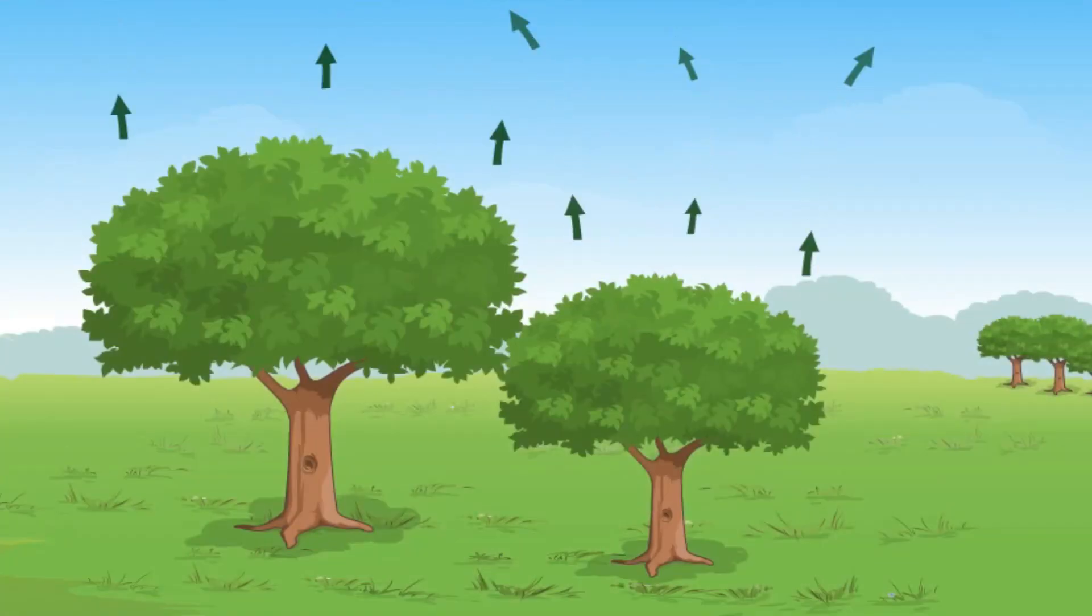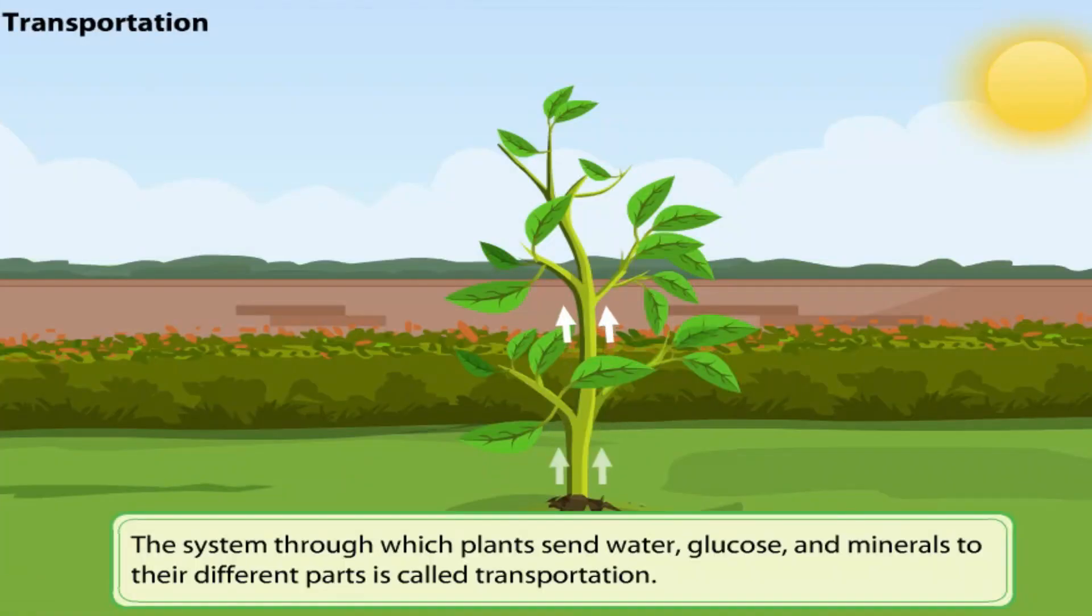Transpiration helps to keep plants cool. Without water, plants become limp and eventually die. For this reason, the water that plants lose through transpiration needs to be replaced. This is where transportation comes in.